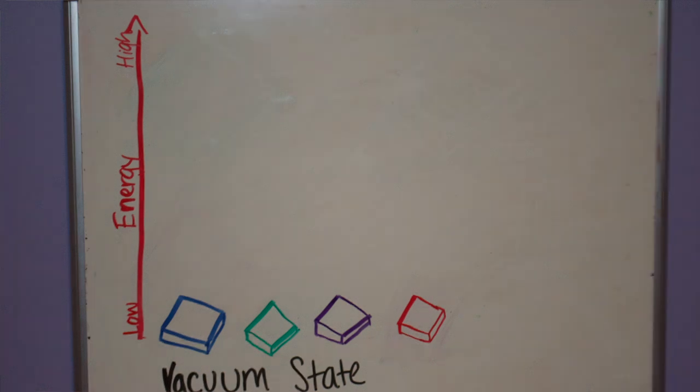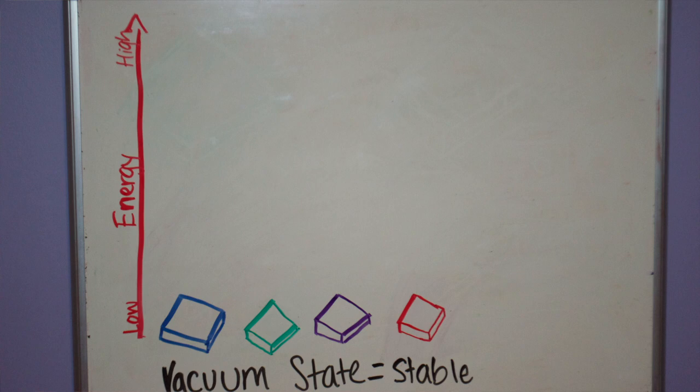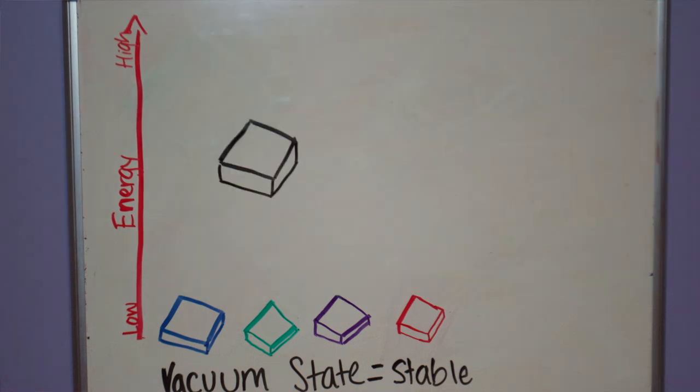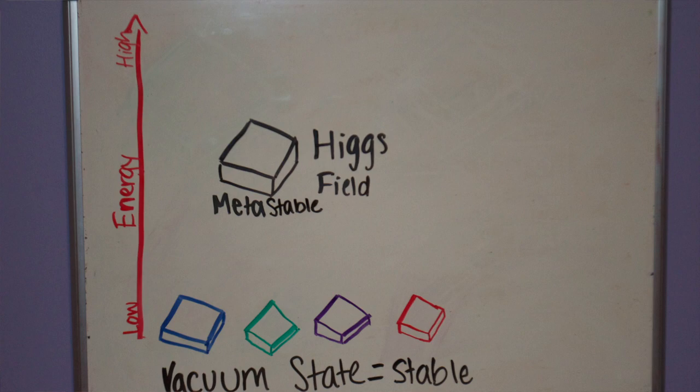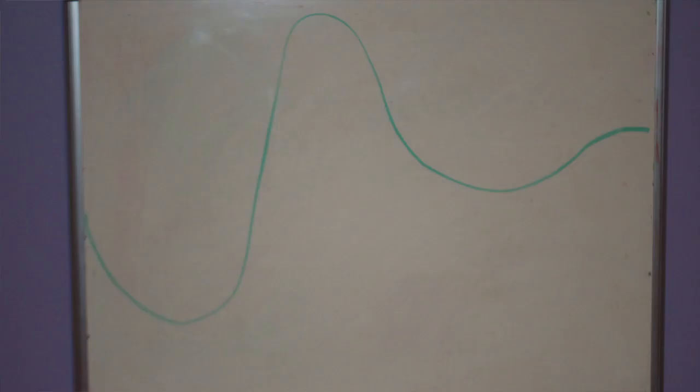Most of these fields are in their vacuum states and are stable. However, there may be one that isn't yet. The Higgs field could possibly be metastable. This means that the field looks like it's stable, but it really isn't.